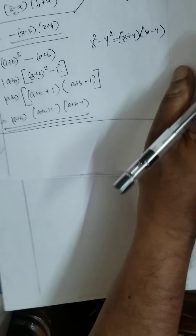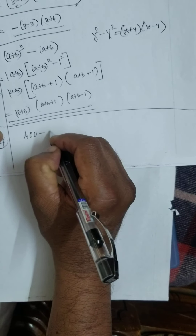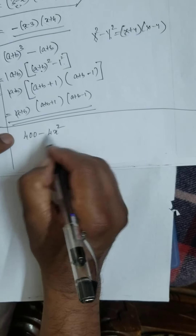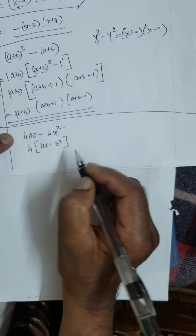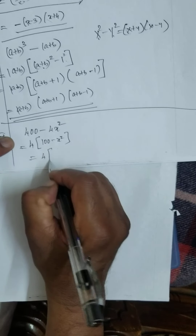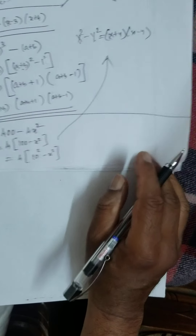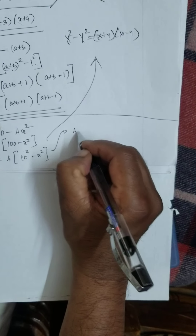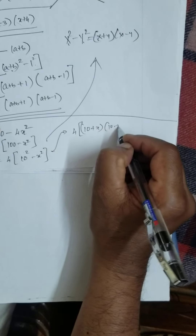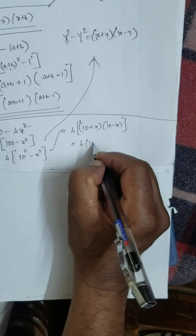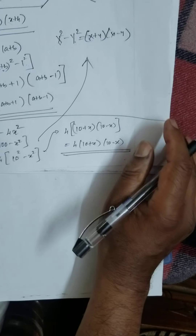7th: 400 minus 4x². All are simple sums. 4 is the common factor: 4(100 minus x²) = 4(10² minus x²). Apply this formula — what you get: 4(10 plus x)(10 minus x), or 4(10 + x)(10 − x). This is the correct answer.